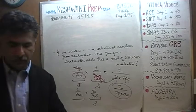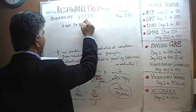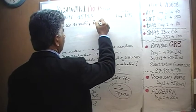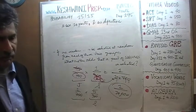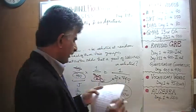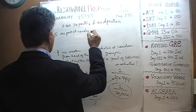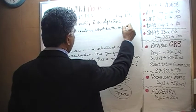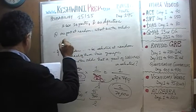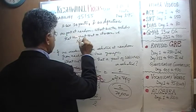The next problem is going to be very similar to what we just did. We have a box containing 10 identical parts, and we are told that out of these 10, 2 are defective. We know that for a fact. The question is: if one part is chosen at random, what are the odds that the part chosen is not defective?